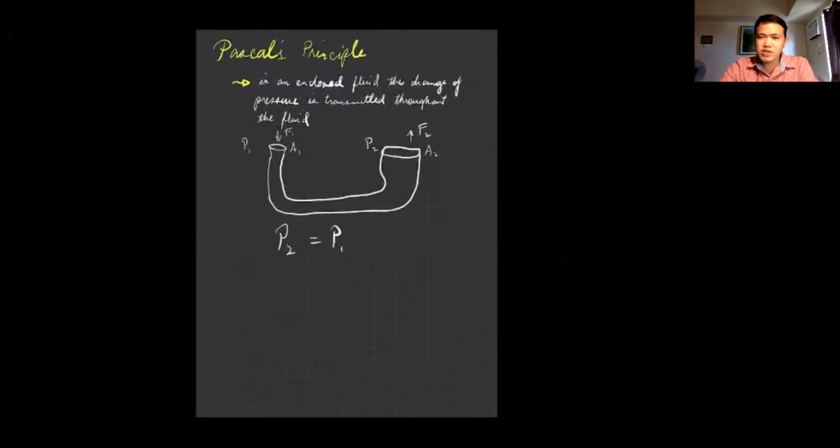Okay, so we can have some formula here on, let's say you want to determine the output force if you apply a smaller amount of force. So let's say pressure is force per unit area, so your force here is f2 over area 2 equals f1 over area 1. So it means that your force depends on the ratio of the area.